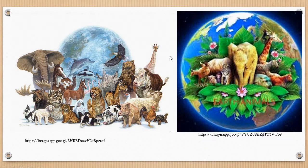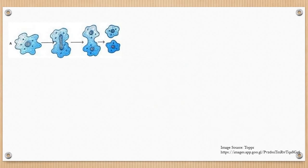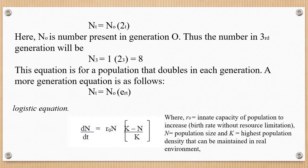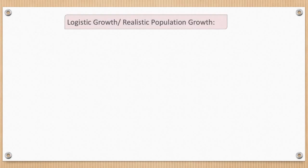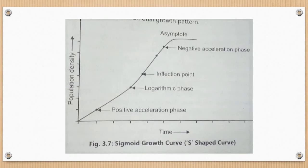Let us take a quick recap of the logistic formula. The logistic equation is: dN/dt = rN × (K − N)/K, where N is the population size, r is the innate capacity of the population, and K is the highest density of a population, that is the carrying capacity. This formula is used for calculating logistic population growth.